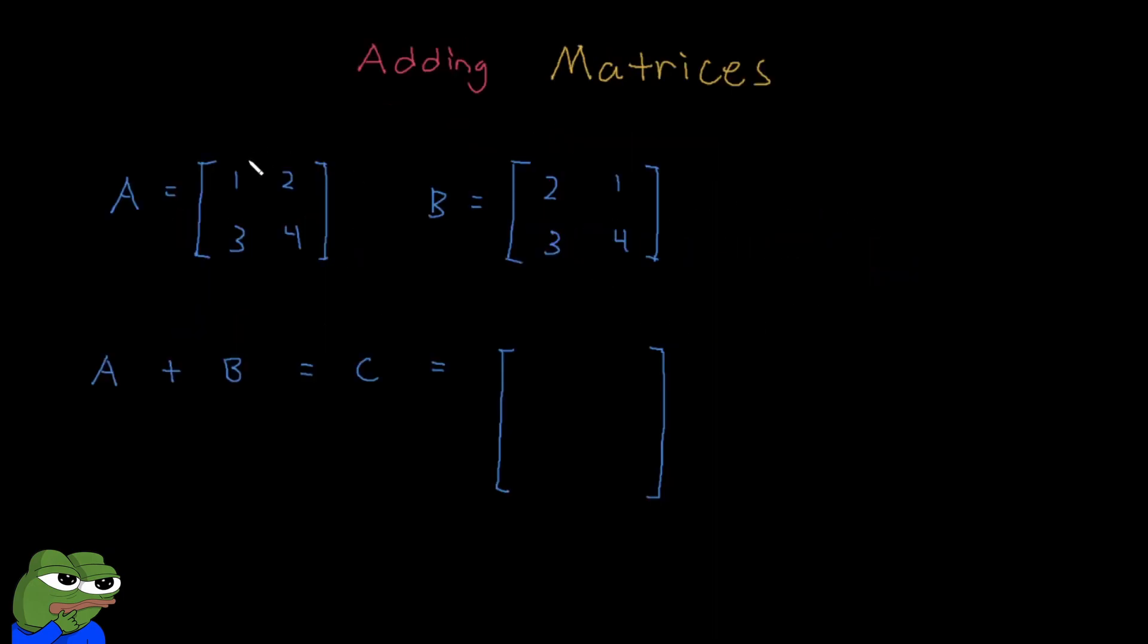Let's add matrices A and B, which are both 2x2 matrices, to make the matrix C. Now remember, you can only add or subtract matrices that have the exact same dimensions. So for example, if this B was a 3x3 matrix, then this wouldn't work.